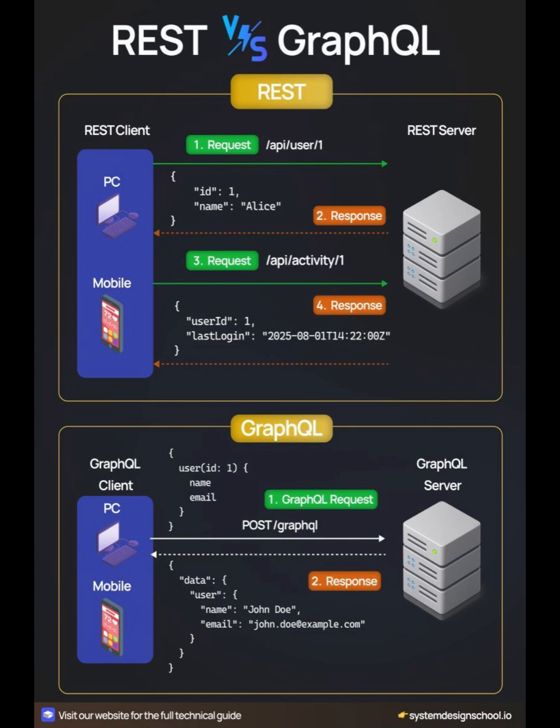GraphQL. GraphQL uses a single endpoint. The client sends one query asking for exactly what it needs. The server responds with just that data — nothing more, nothing less. This reduces overfetching and improves efficiency. It's especially useful for mobile apps and complex UIs.